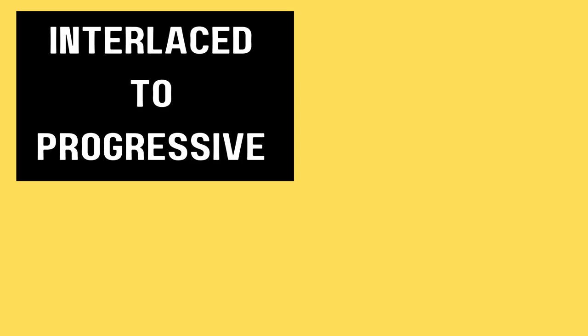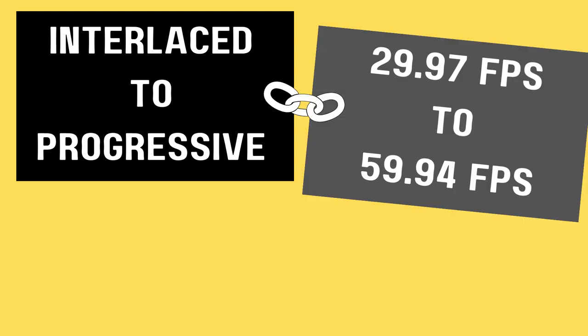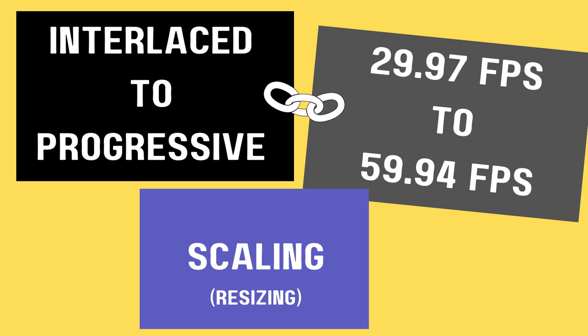What we're trying to do with all these interlaced videos is really three things. The first is to go from an interlaced video to a progressive video, so that all of the fields appear at the same time in every frame. The second thing is to go from 29.97 frames per second to 59.94 frames per second. And the third thing — not really connected to the interlaced/progressive issue — is to scale or resize the video to make it a little bit bigger so that it, in theory, looks better on YouTube.